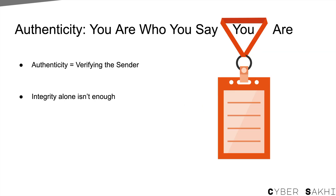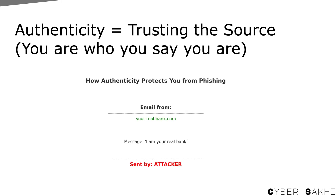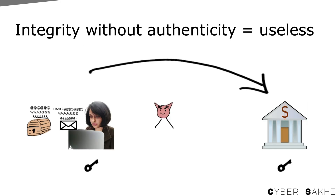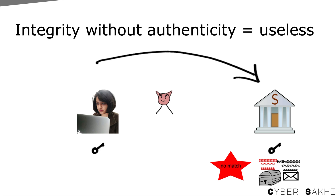In security, authenticity means being sure that the person or system who sent the message is really who they claim to be. In short, you are who you say you are. Authenticity is about trusting the source of the message — some proof that the message came from the legitimate source. In the last video, we attempted integrity of a message by hashing it. But integrity without authenticity is useless. We need a method to prove not just that the message is unchanged, but also that the hash was created by the legitimate sender.